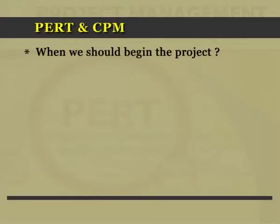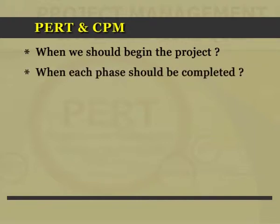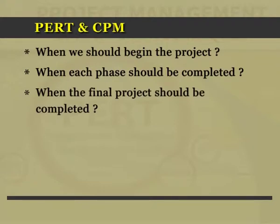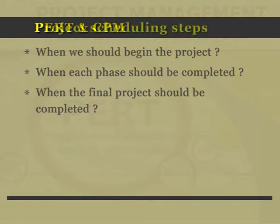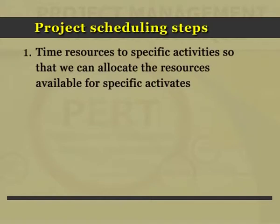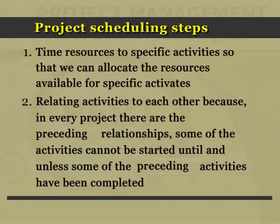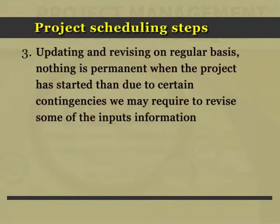For project scheduling — deciding when to begin the project, when each phase should be completed, and when the project should finally be completed — three steps are needed: tying resources to specific activities, relating activities to each other based on preceding relationships (since some activities cannot start until preceding ones are completed), and updating and revising on a regular basis, as contingencies may require revisions to the input information.